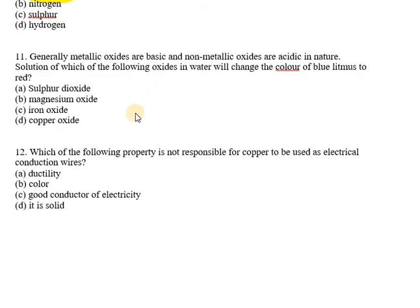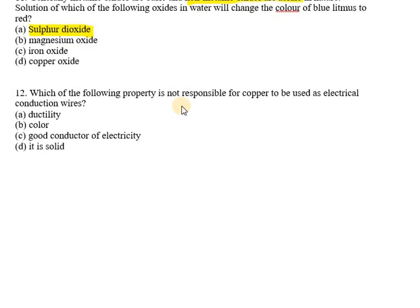Question number 11: metallic oxides are generally basic and non-metallic oxides are acidic. The solution of which of the following oxides in water will change the color of blue litmus to red? The answer is sulfur dioxide. Since sulfur dioxide is a non-metallic oxide and non-metallic oxides are acidic, it will change blue litmus to red.